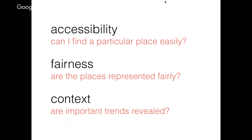These are some of the goals that good election maps accomplish. There's accessibility — can I find a particular place easily? Can I quickly determine the result in the place where I live? There's fairness — are states or regions or districts represented fairly and accurately based on the number of people that live there, or the number of electors they have? And context — are important geographic trends revealed? How does this election compare to previous ones? How did the candidates do in places where the race was closest? Most of the time, good visualizations require trade-offs, because it's really hard to find a form that does all of these things really well.